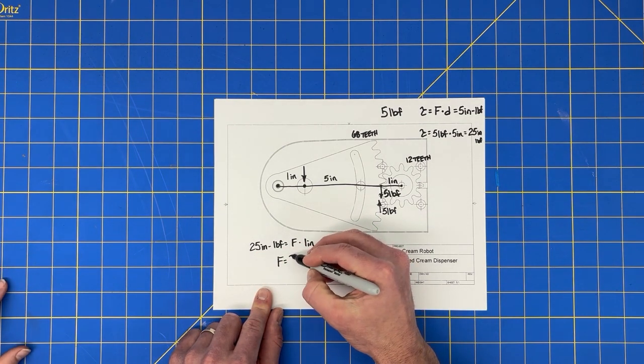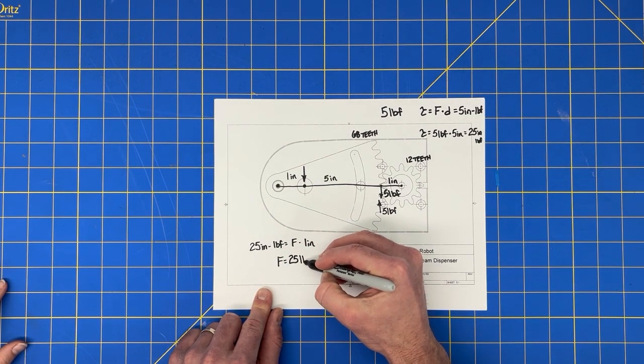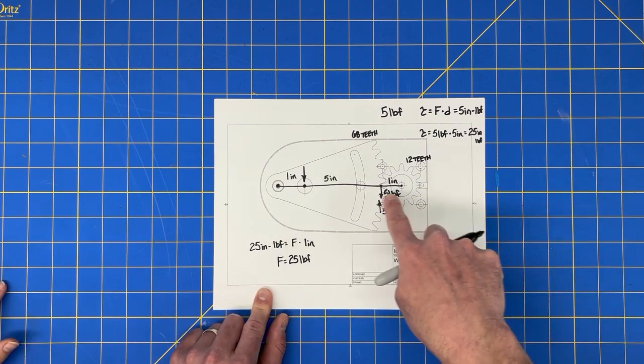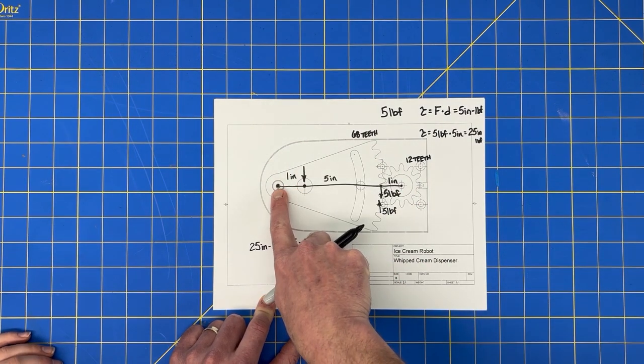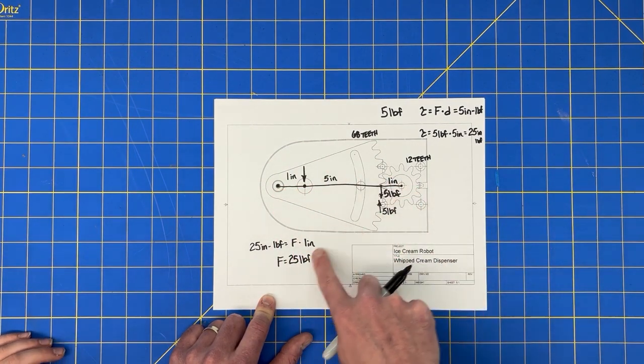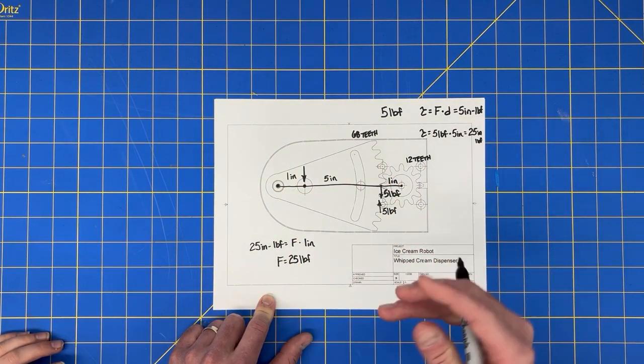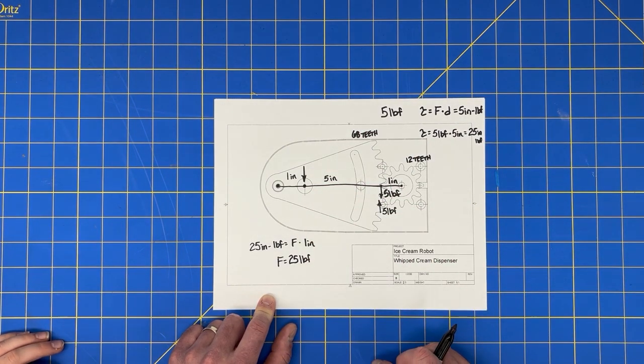And our new distance is one inch. So our new force is going to be the 25 inch pounds divided by one inch, which is 25 pounds. So because our gear is almost five times as large and we happen to use this same distance between the rotational center and the whipped cream as the small gear, it ends working out that we just get five times the amount of force to dispense the whipped cream.